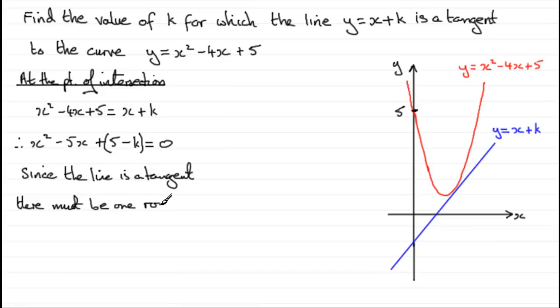Therefore, we know that the discriminant in the quadratic equation ax squared plus bx plus c equals zero - the discriminant, that is b squared minus 4ac - must equal zero.